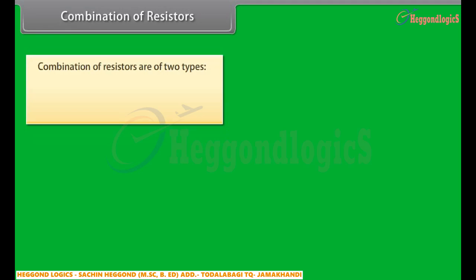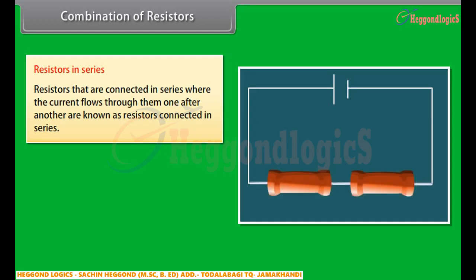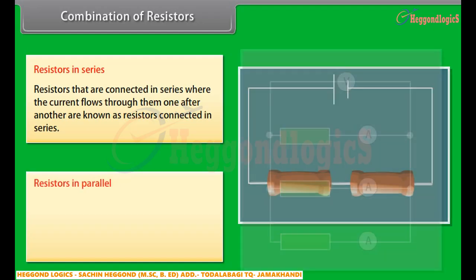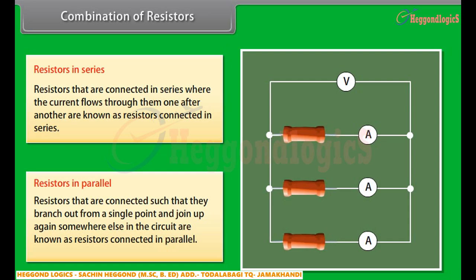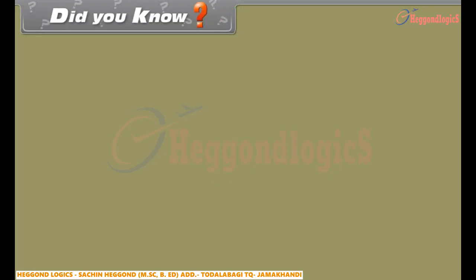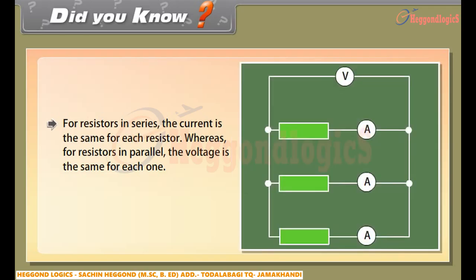Combinations of resistors are of two types: resistors in series and resistors in parallel. Resistors in series: resistors connected in series are those where the current flows through them one after another. The current depends on the applied voltage, the number of components, and the nature of components in the circuit. Resistors in parallel: resistors connected such that they branch out from a single point and join up again somewhere else in the circuit. The current through each component is the same as if it were the only component present, so the total current through the battery is the sum of the currents through each branch. Did you know: for resistors in series, the current is the same for each resistor, whereas for resistors in parallel, the voltage is the same for each one.